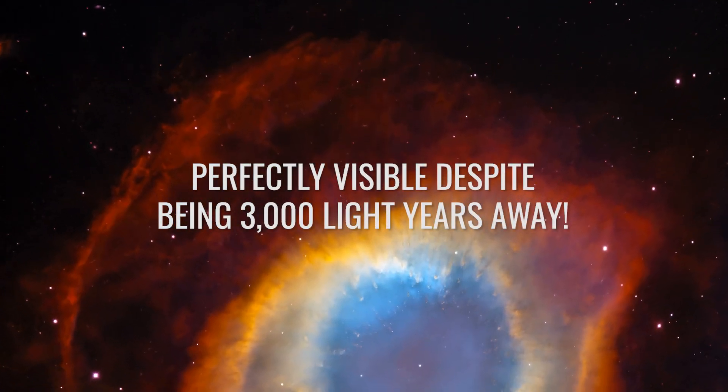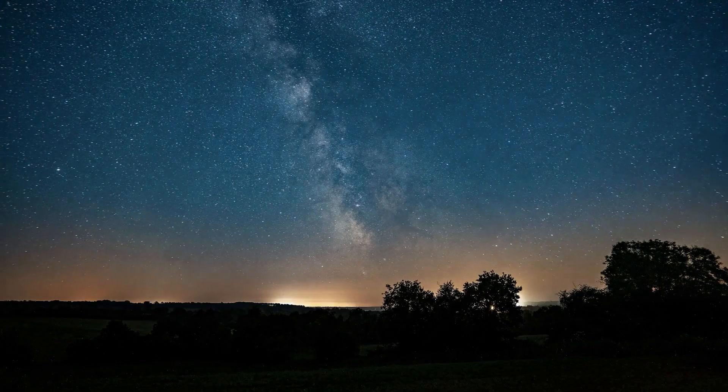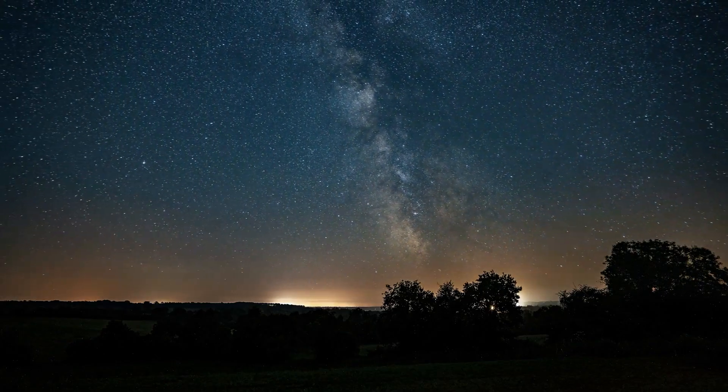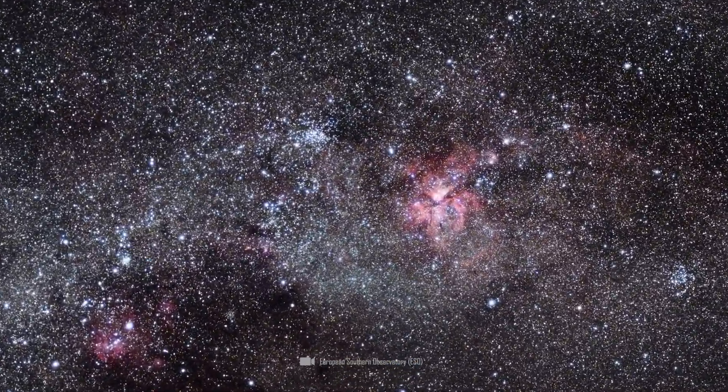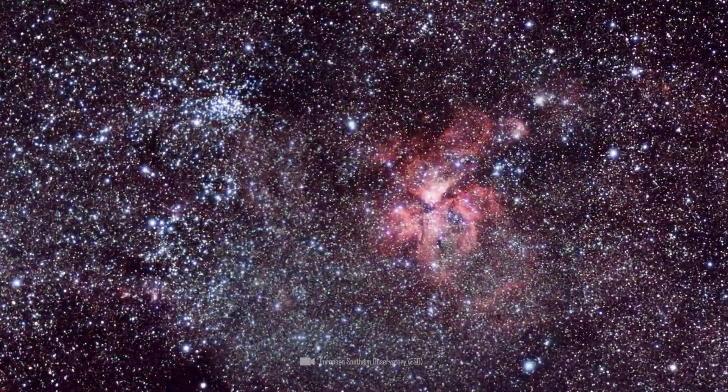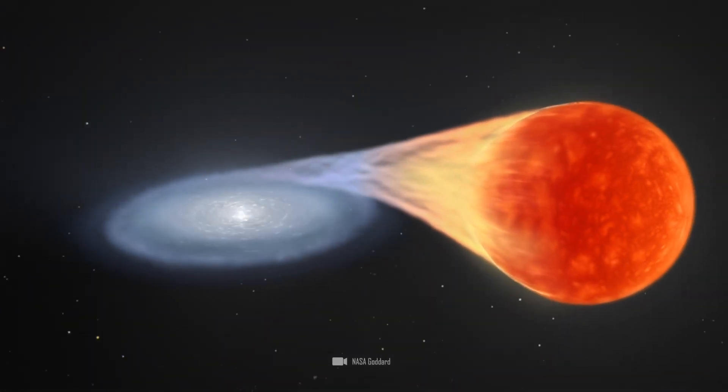Perfectly visible despite being 3,000 light years away. It's actually incredible. T Corona Borealis is more than 3,000 light years away from us, and yet we will be able to see it very well with the naked eye. The binary system is located in the constellation Corona Borealis.